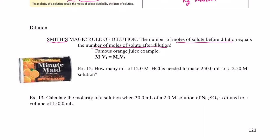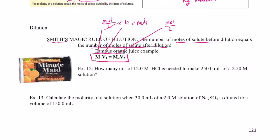The equation M₁V₁ = M₂V₂ represents moles before equals moles after. Molarity (moles per liter) times volume (liters) — liters cancel — gives moles. The same is true for the other side: M₂ (moles per liter) times V₂ (liters) also gives moles. So moles before the dilution equal moles after the dilution.